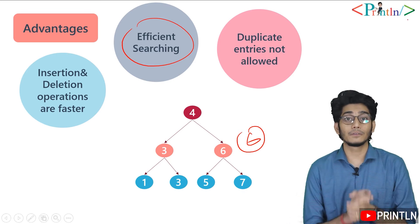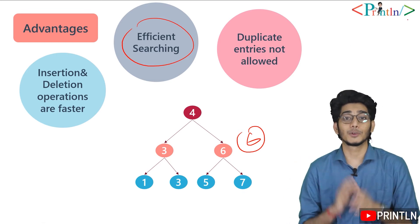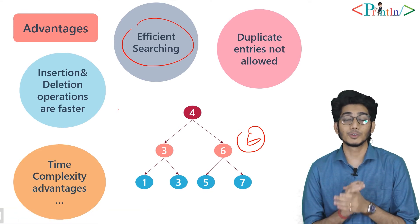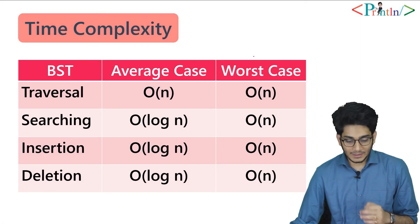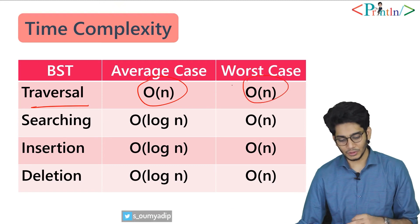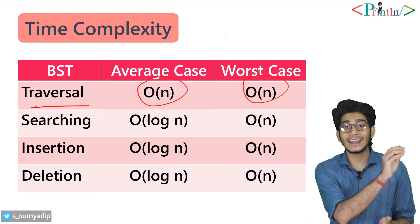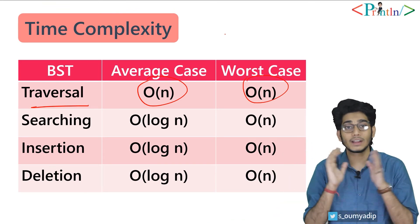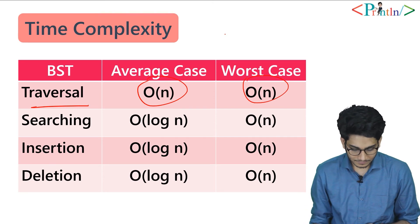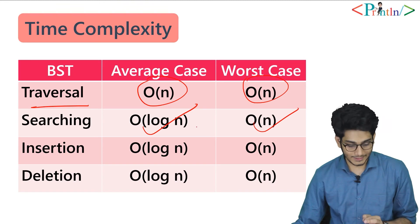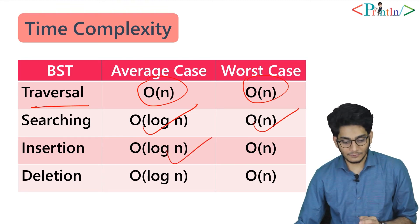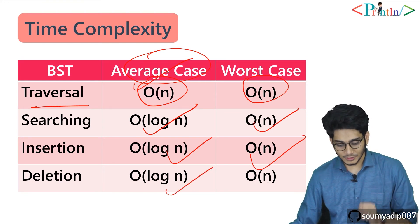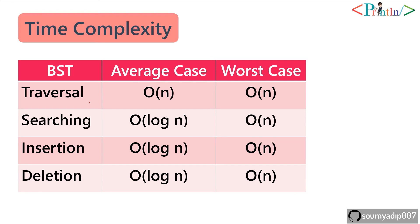We'll discuss insertion, deletion, and searching in detail in the next videos. The main advantage of BST is time complexity — it takes minimal time to perform such operations. For traversal the time complexity is O(n) for both average and worst case, since we must visit all nodes. Searching takes O(log n) for the average case and O(n) for the worst case. Insertion takes O(log n) on average and O(n) in the worst case. Deletion also takes O(log n) on average and O(n) in the worst case. This chart is very important — please take a screenshot.